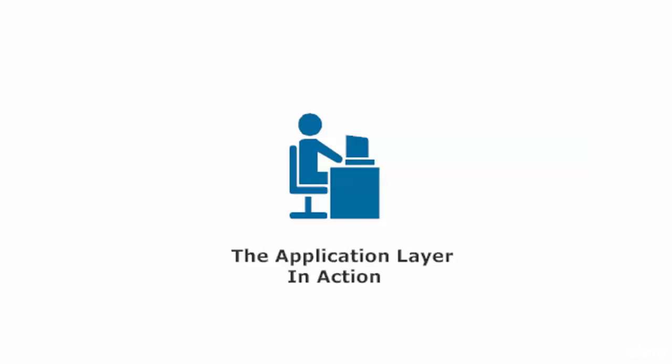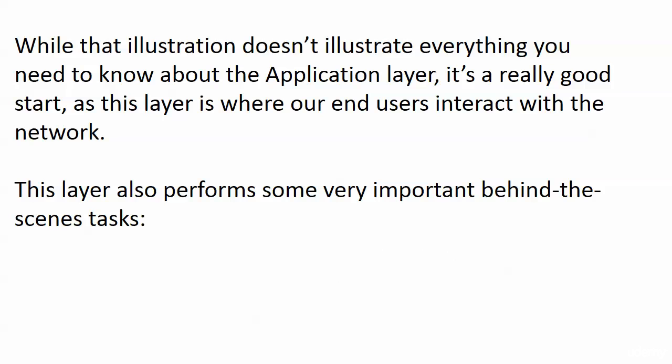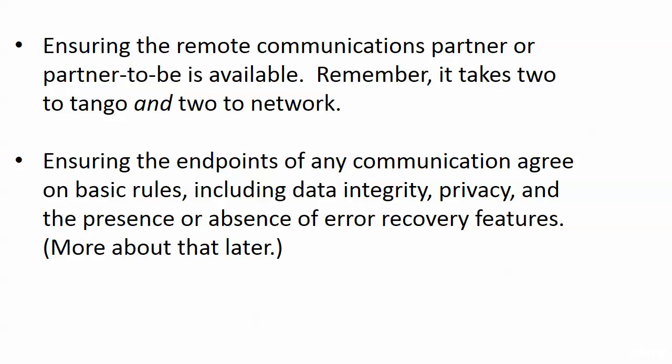That's not everything you need to know about the application layer, but it's a really good start, because this layer is where our end users interact with the network. This layer also performs some very important behind-the-scenes tasks: first, ensuring that our remote communications partner is available — it takes two to network, to have an endpoint-to-endpoint communication, we need two endpoints. This layer also ensures that those endpoints agree on basic rules, including data integrity, privacy, and the presence or absence of error recovery features.